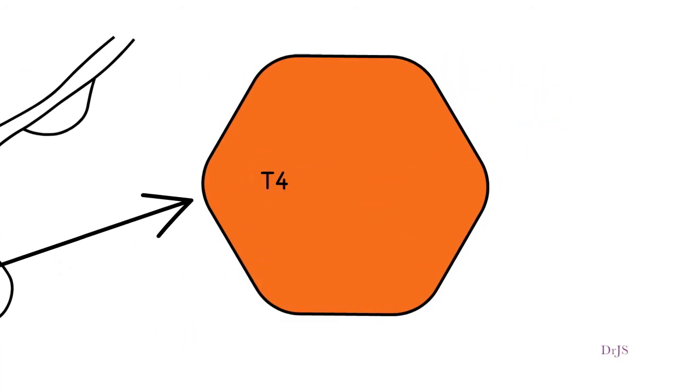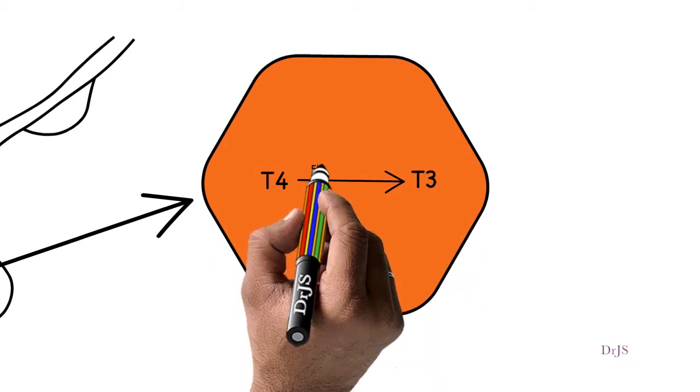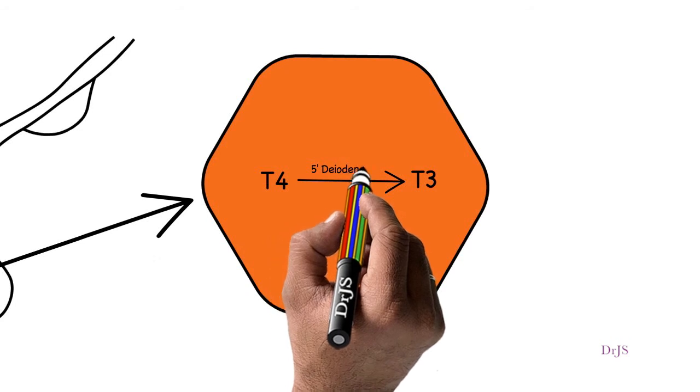When free T4 enters into the thyrotroph, it is converted into T3 with the help of 5' deiodinase enzyme present in the thyrotroph cell.